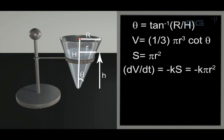Which implies that dV/dt equals minus kS, which equals minus k pi r squared.